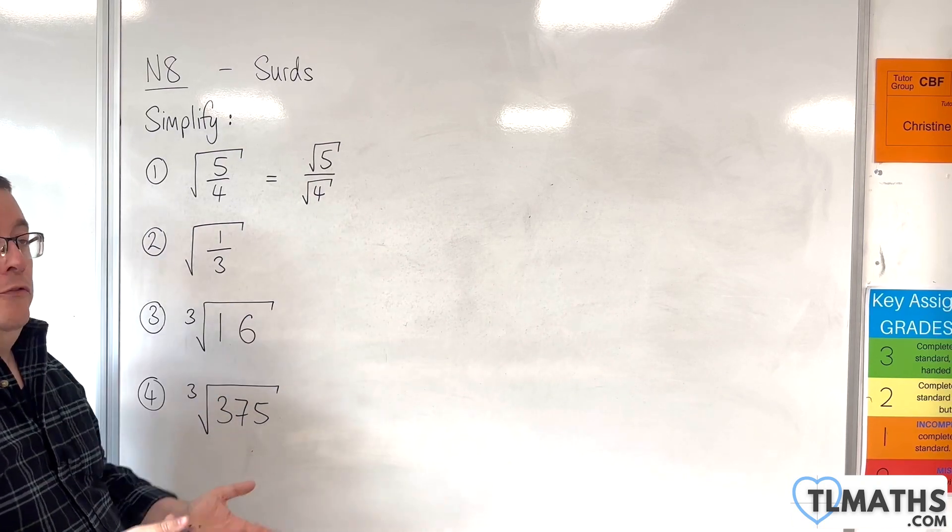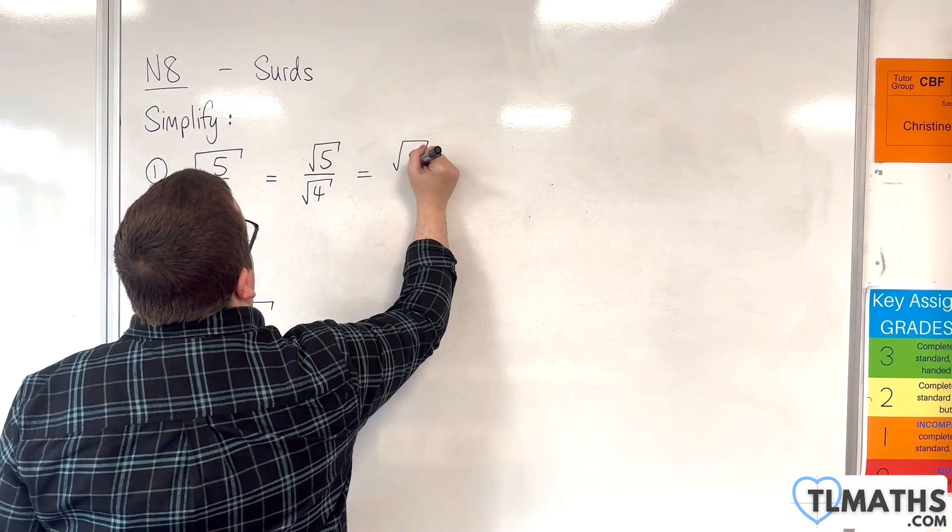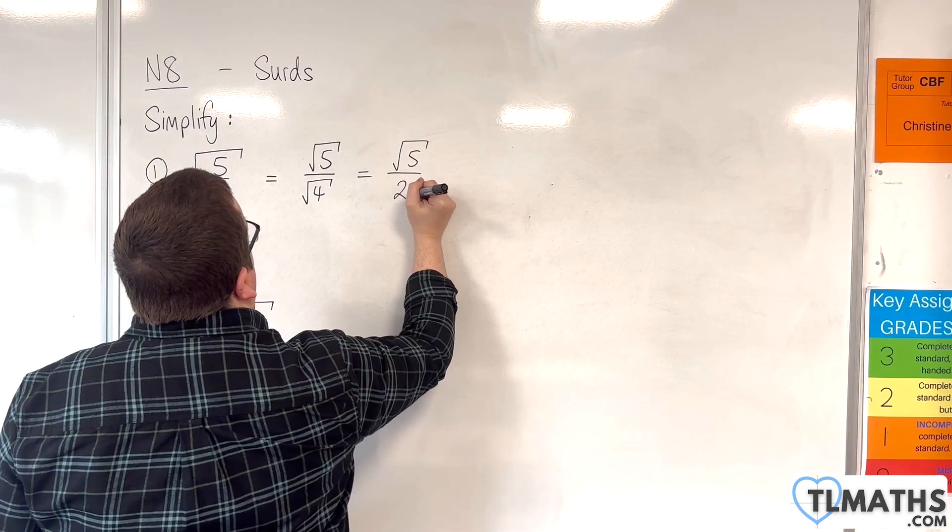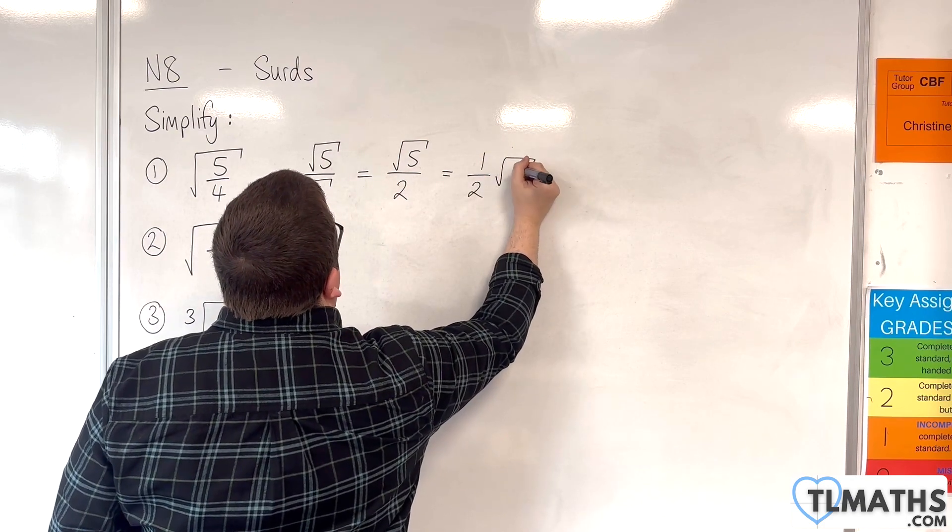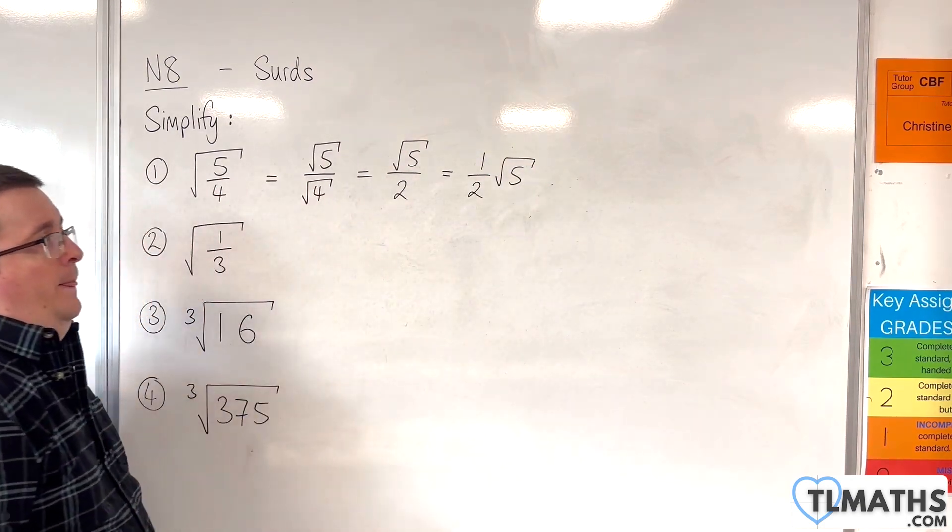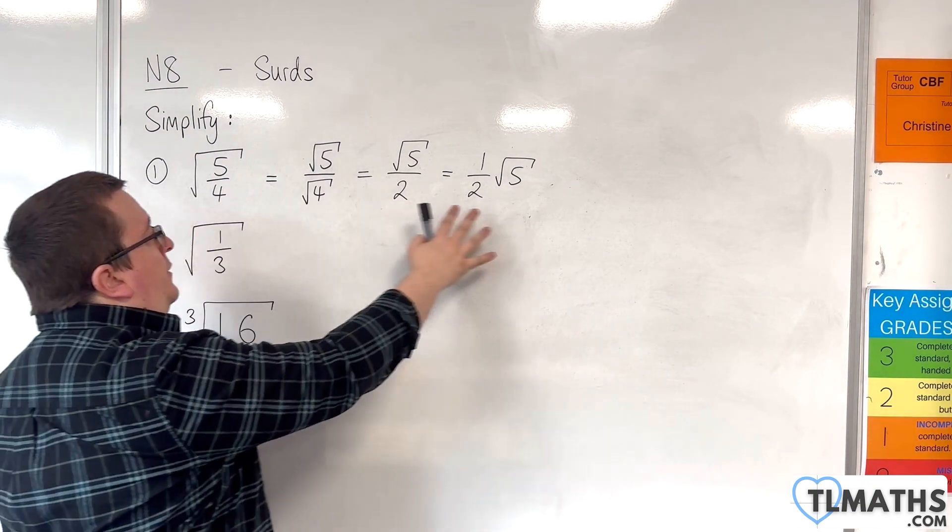Now, the square root of 4 is, of course, 2. So, this is the same as square root of 5 over 2. Or, you can write it as 1 half times the square root of 5. So, that is that surd simplified.